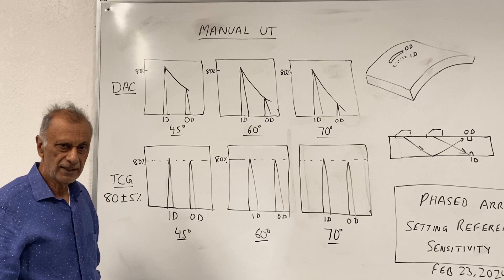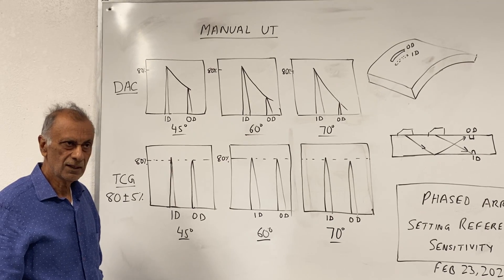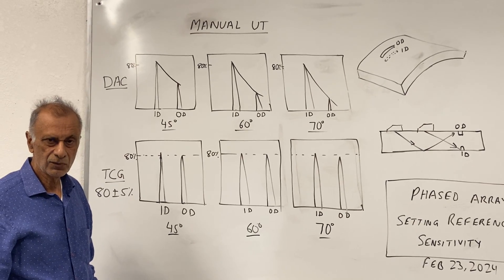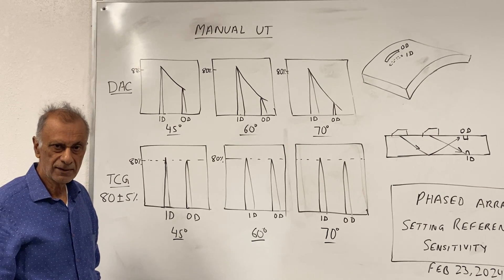In phased array testing, we actually use the TCG curve so that we bring all the signals to 80% full screen height.